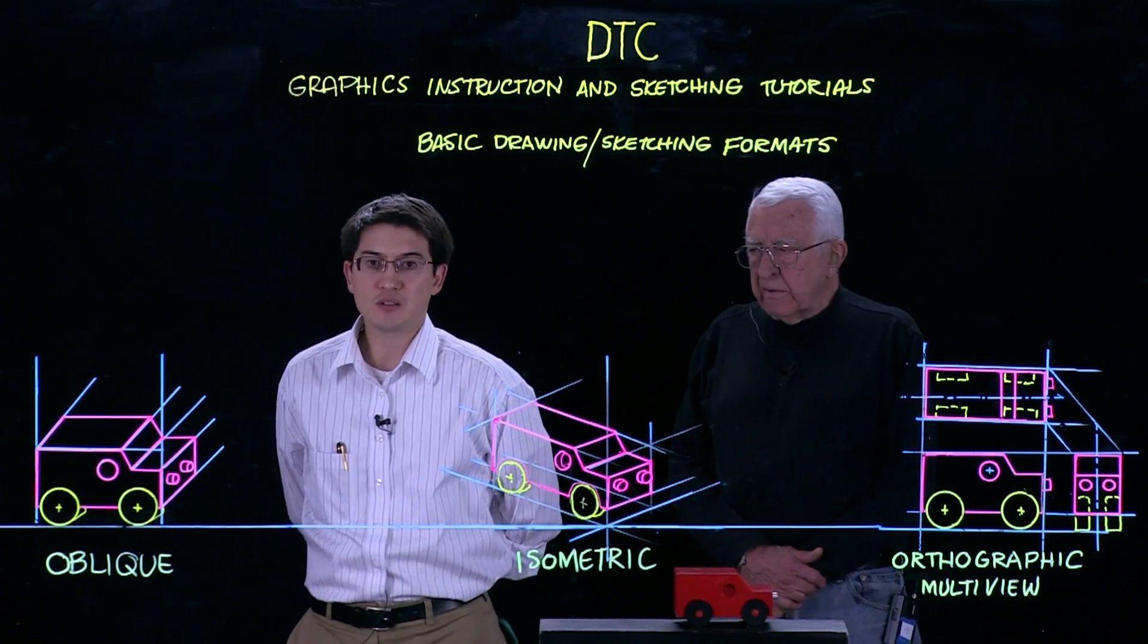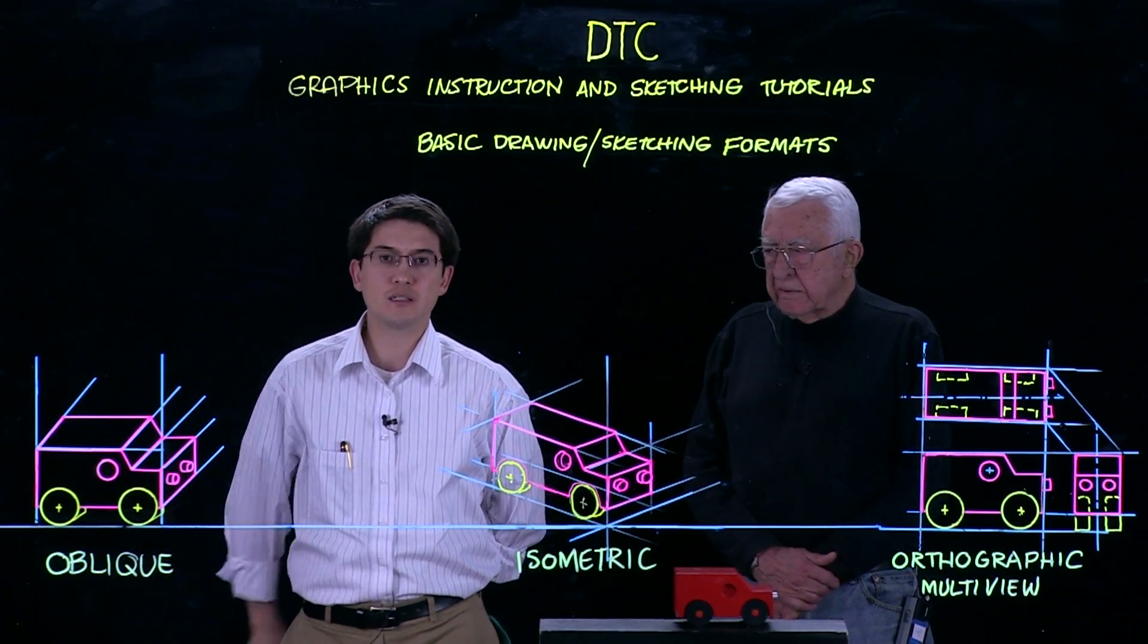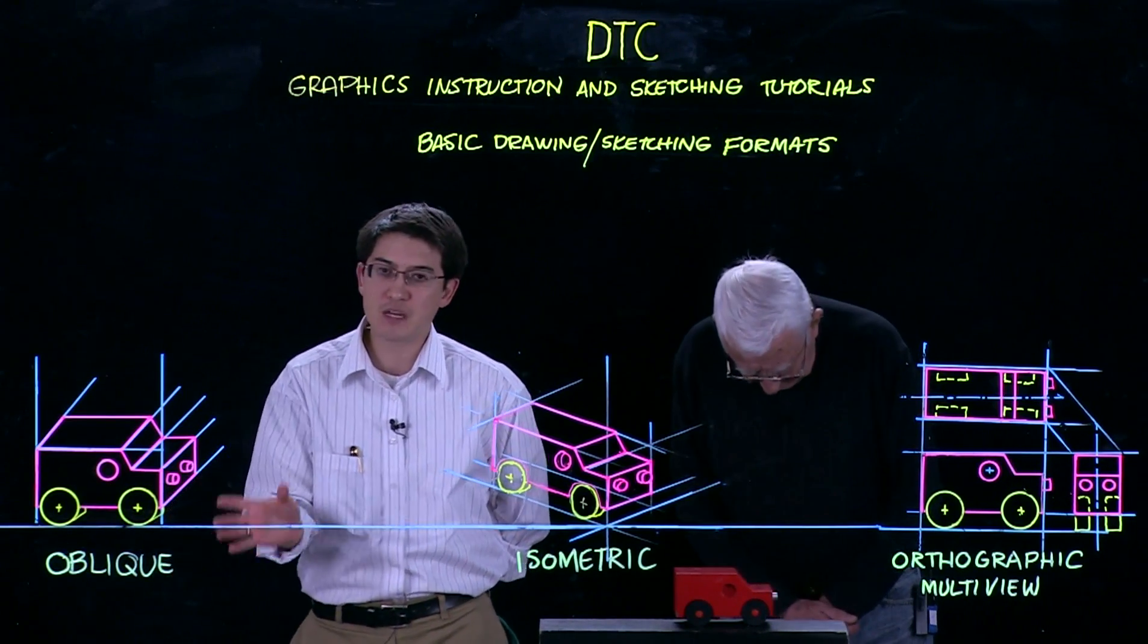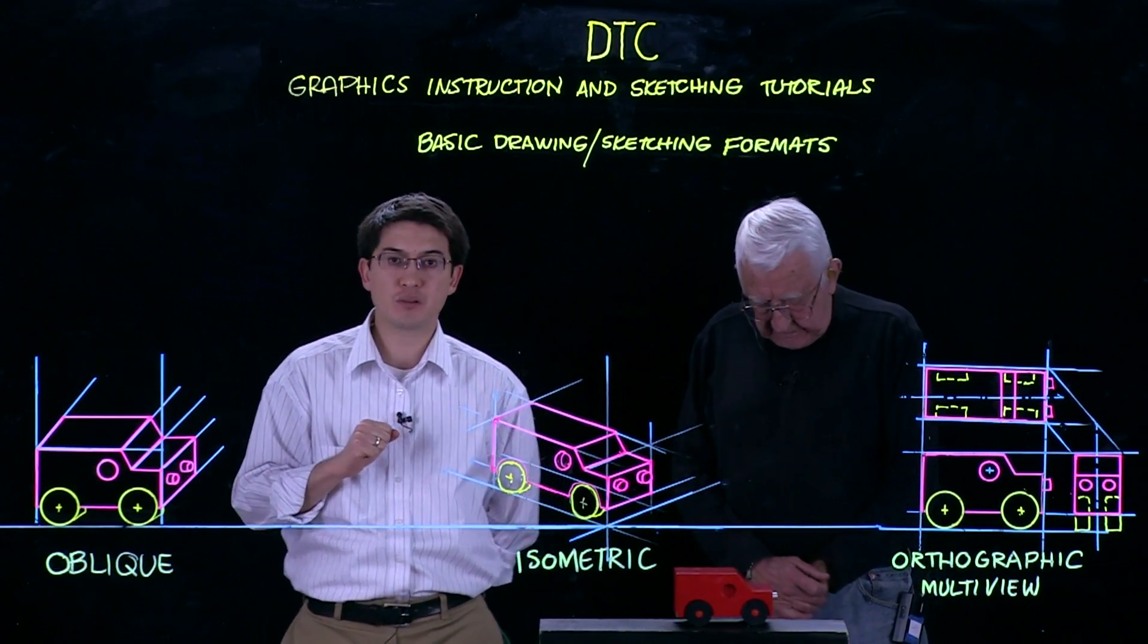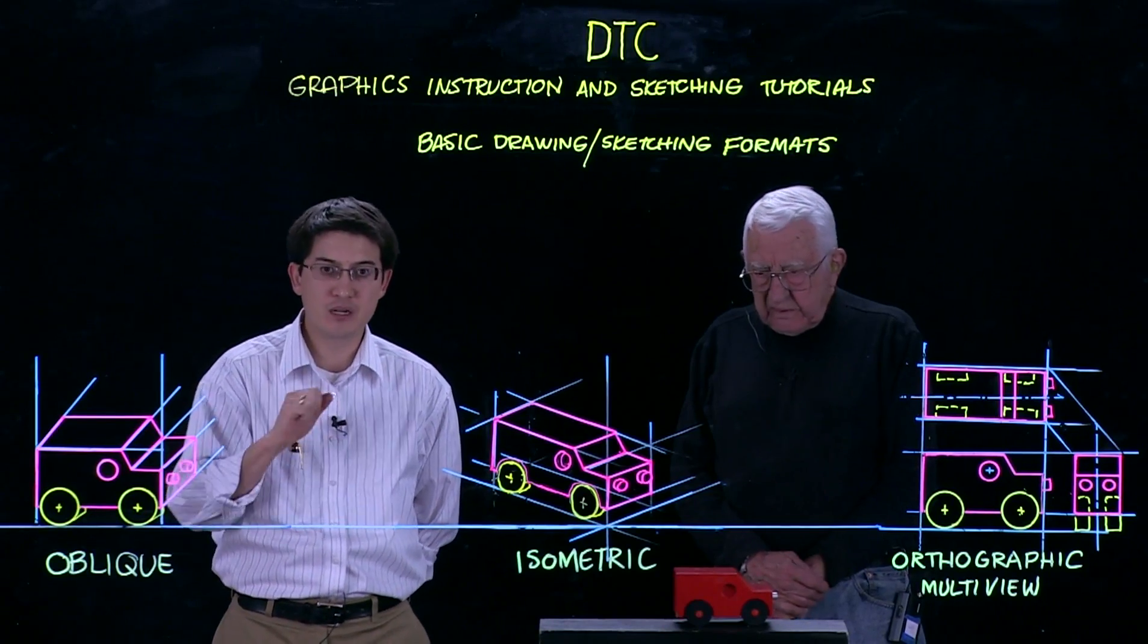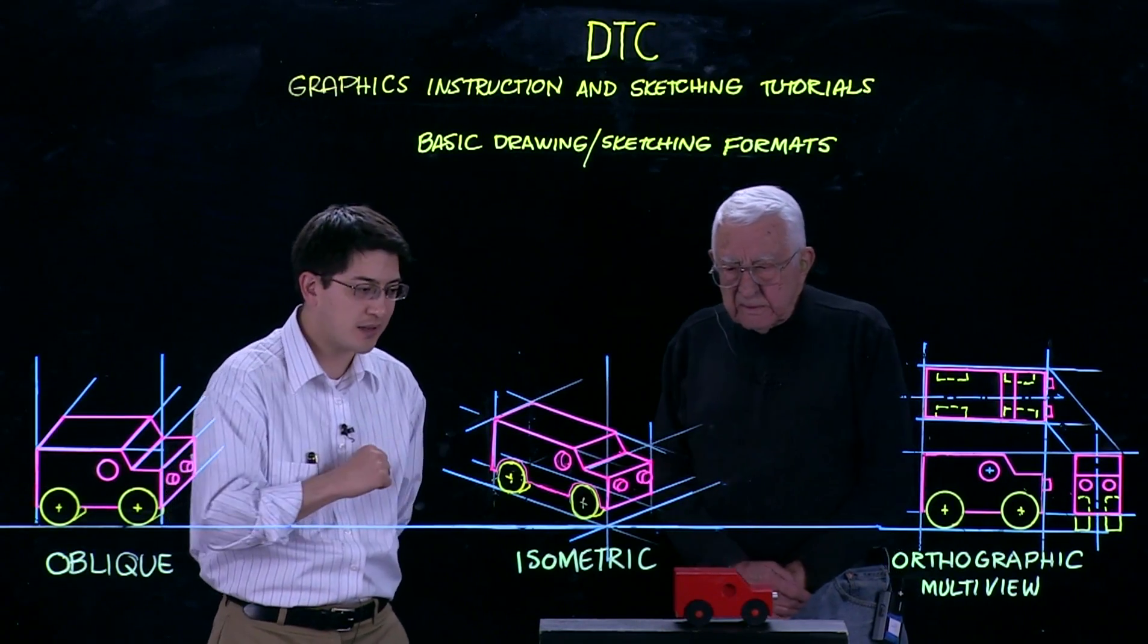The problem with the oblique as you can see here is that this third view is clearly distorted so you cannot measure dimensions off of three axes. If you do need a more precise way to measure three-dimensional sketch you'll want to use the isometric.